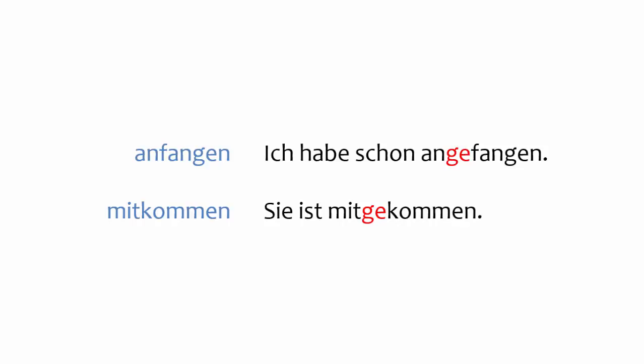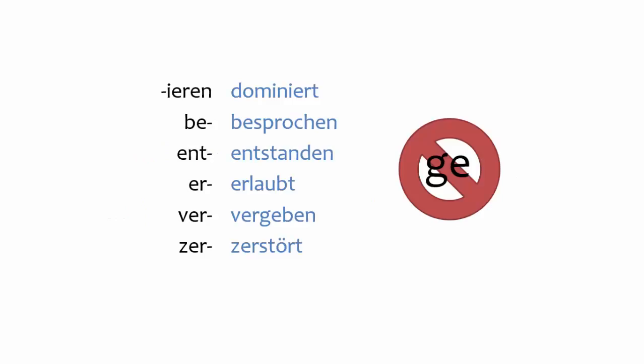Two more quick notes. First, remember that separable prefix verbs separate when forming the past participle — if you need a refresher on separable prefix verbs, see the playlist. Second, notice that some past participles dispense with the GE prefix. These are typically inseparable prefix verbs and verbs that end in -IEREN. For a refresher on inseparable prefix verbs as compared to separable prefix verbs, see the video in the playlist.